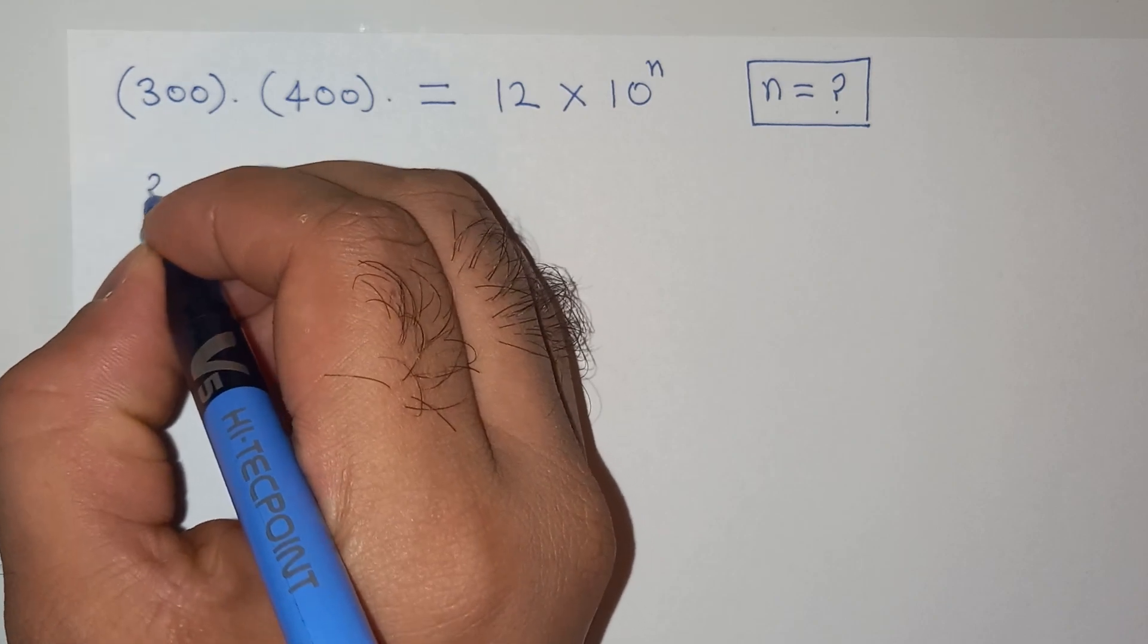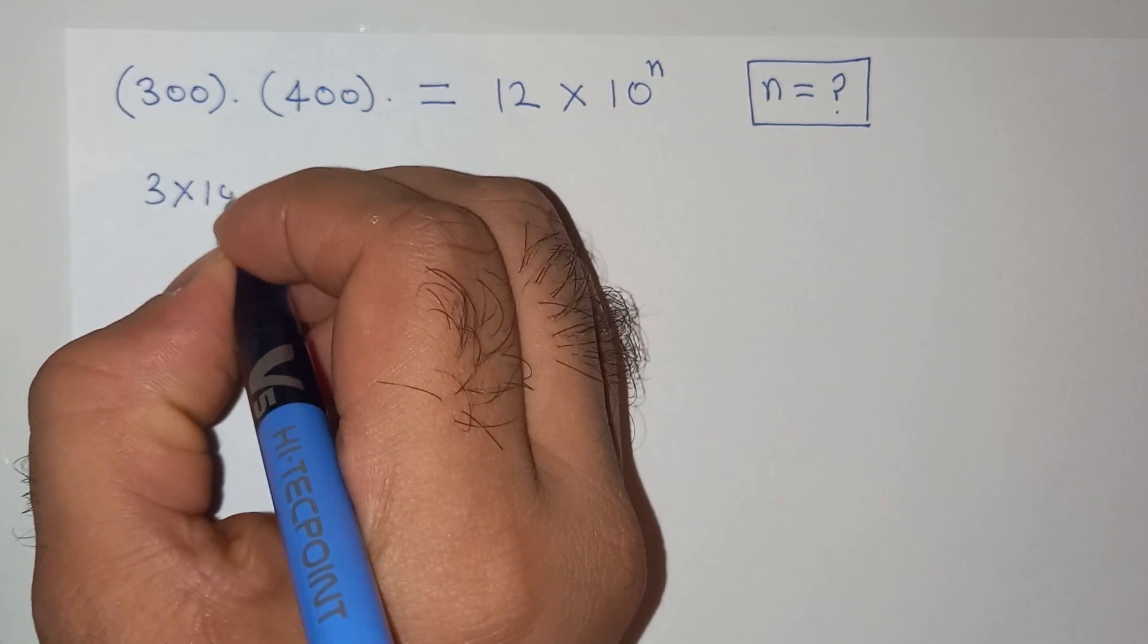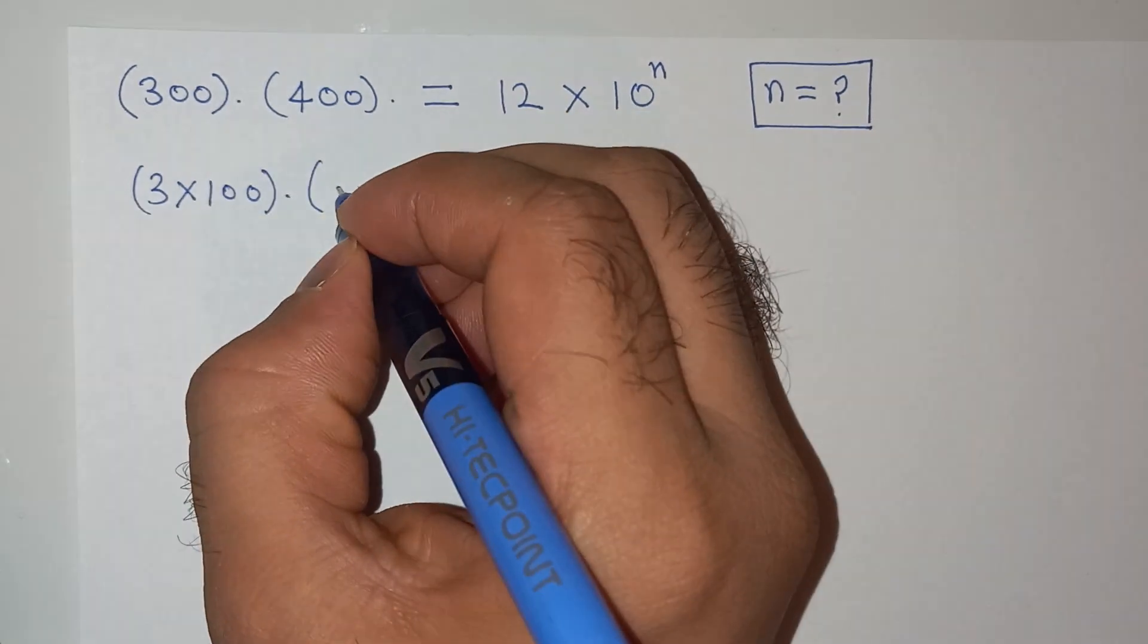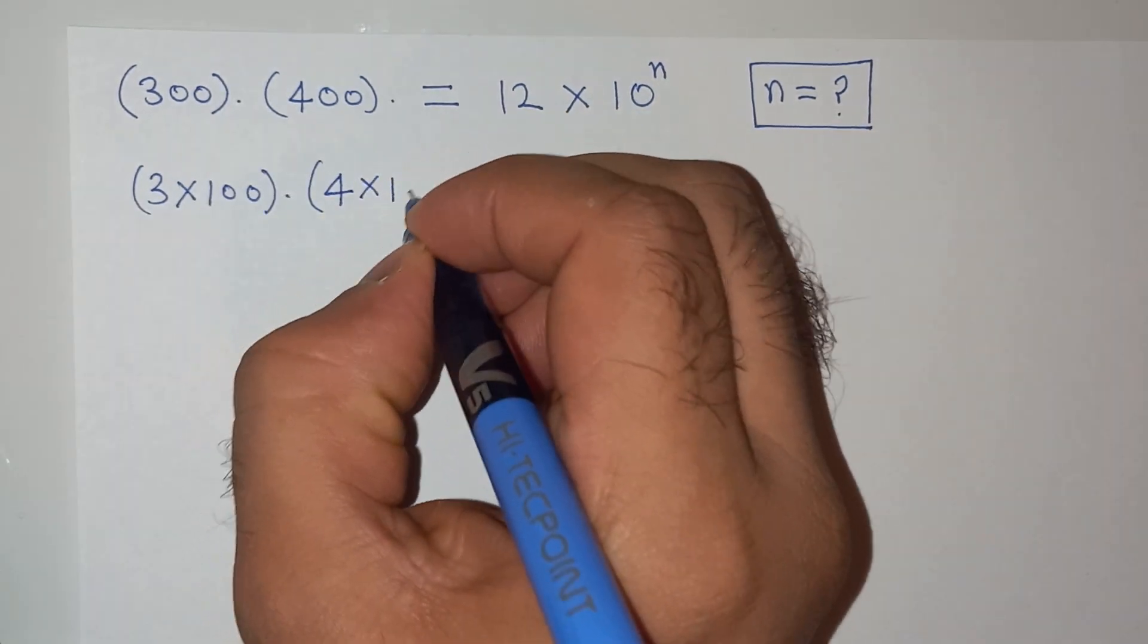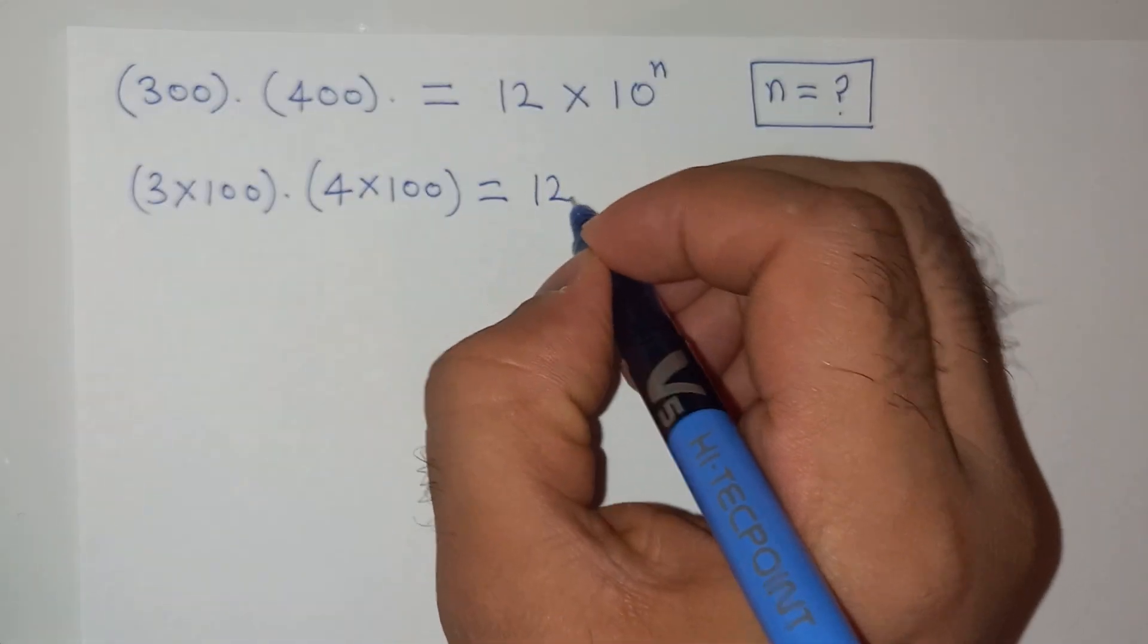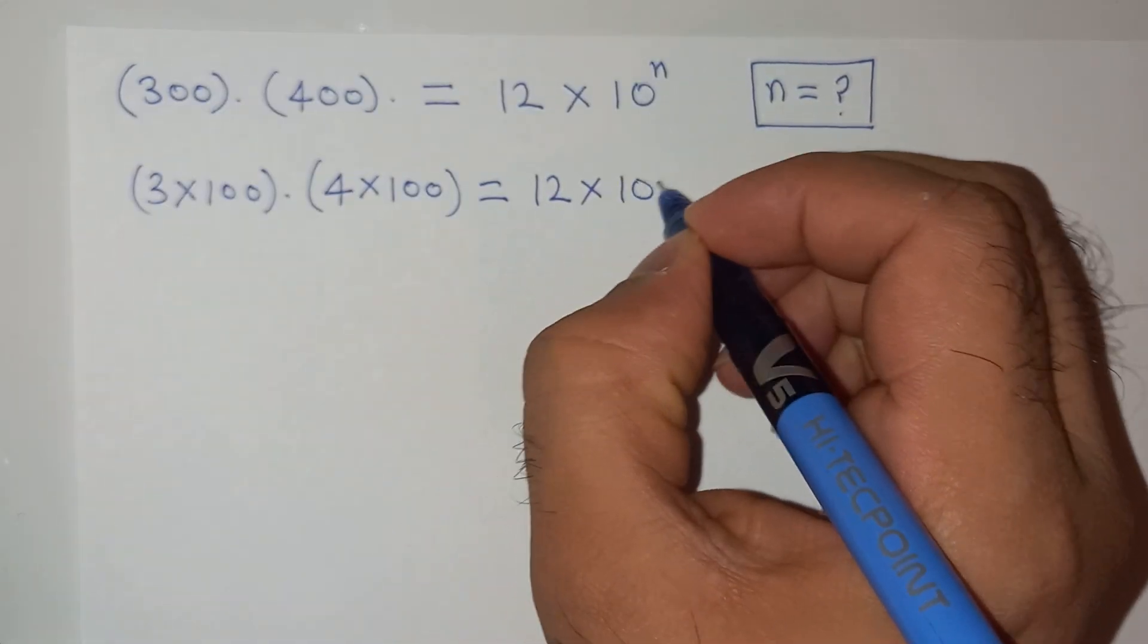300 can be written as 3 multiplied by 100, and 400 can be written as 4 multiplied by 100, equals 12 multiplied by 10 power n.